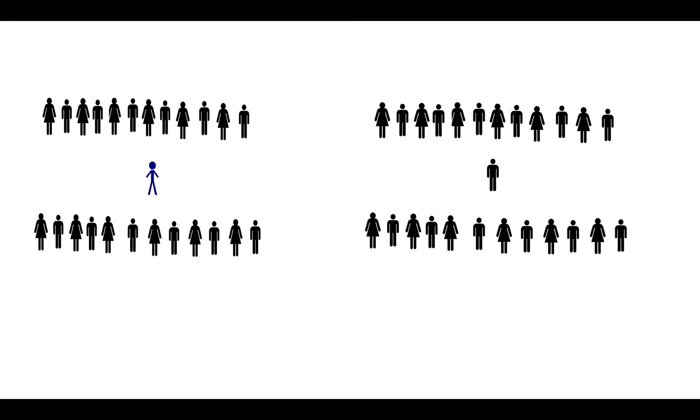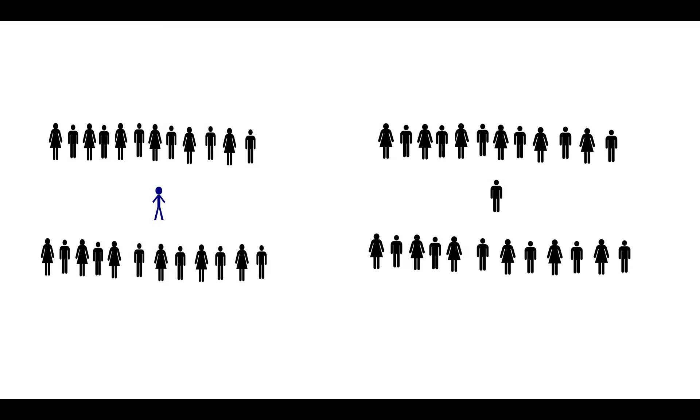So, the researcher decides to give John's class the intervention she has thought of and does nothing with the second class, so that they are the control. Then the researcher gives a post-test to see how well the intervention worked. If it did not work, she expects John to still be equal with the average student in the other class.